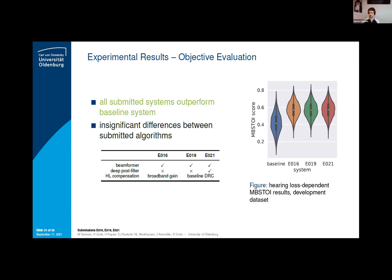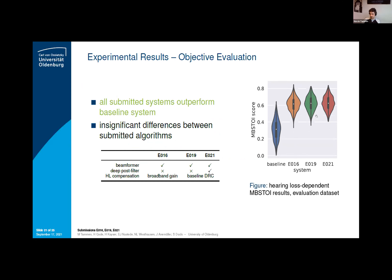Going over to the experimental results and starting with the objective evaluation: violin plots show the MBSToI — the listener-dependent MBSToI results on the development dataset. All of the submitted systems clearly outperform the baseline system. However, if you compare the submitted systems, the performance is almost identical, with very insignificant differences in between. The same tendencies hold on the evaluation dataset.